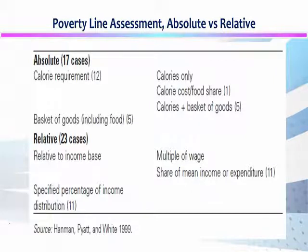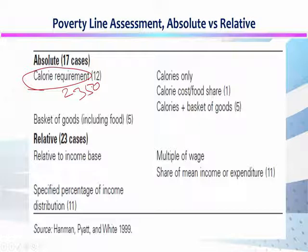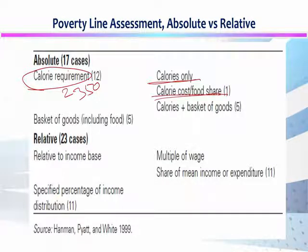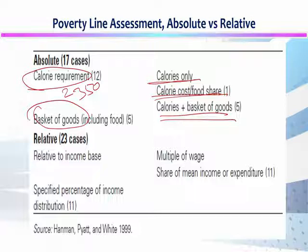किस तरह absolute poverty को measure करने के लिए calorie requirement को हम use करते हैं — क्या एक individual की 2350 calorie उसको मिल रही है या नहीं। इसके इलावा सिर्फ calorie यानी food energy intake use कर सकते हैं, calorie cost के साथ food के share को शामल कर सकते हैं, calorie plus basket of other goods भी शामल कर सकते हैं, and basket of goods भी use कर सकते हैं।